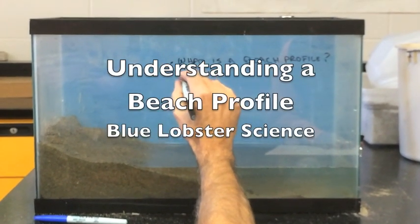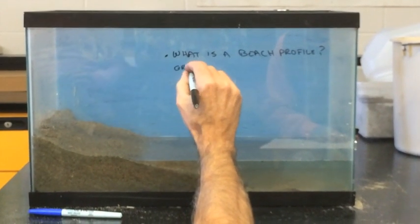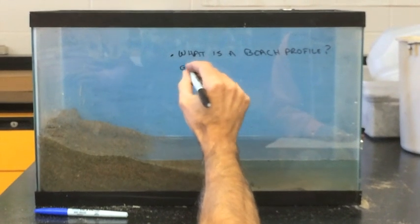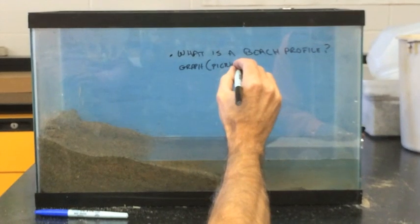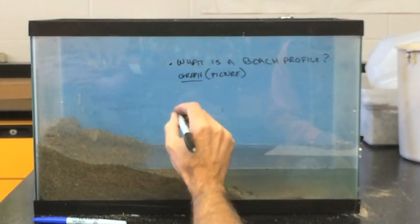A beach profile is really a graph, and the word graph literally means picture. It literally means that.